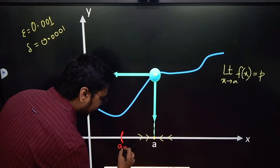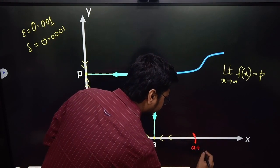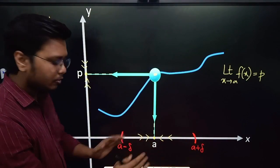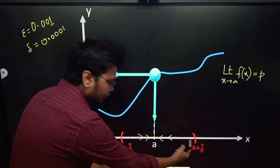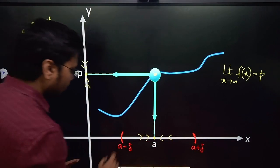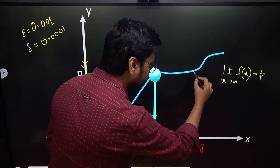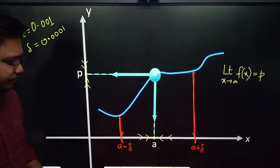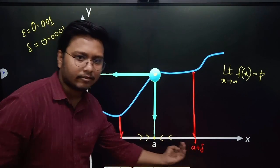Now imagine on one side I have a minus delta and on the other side I have a plus delta. Delta is very small, so imagine this is a very magnified image. The distance from a to a plus delta is the delta length, and the same on the other side. I have gone delta length on both sides of a — that is a minus delta and a plus delta. I'll draw two vertical lines here.